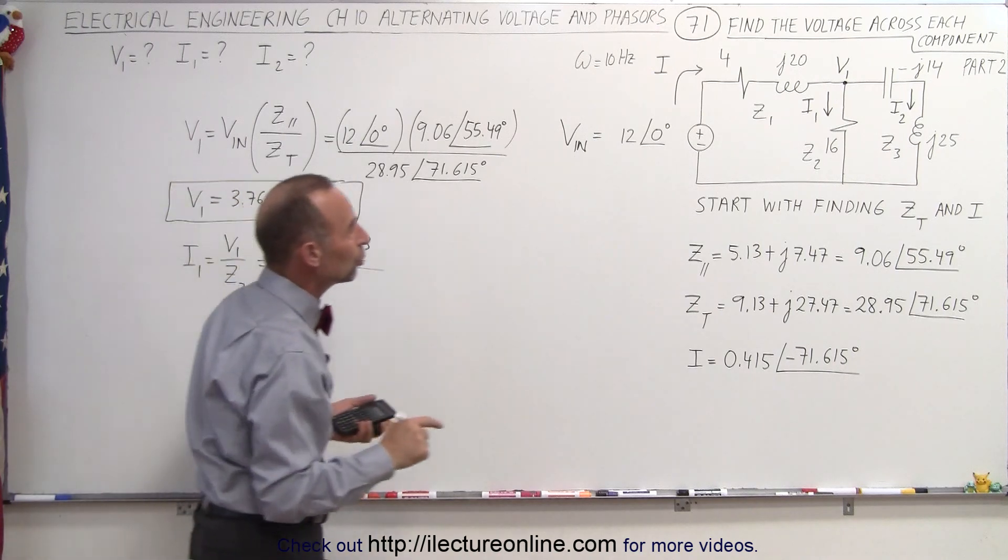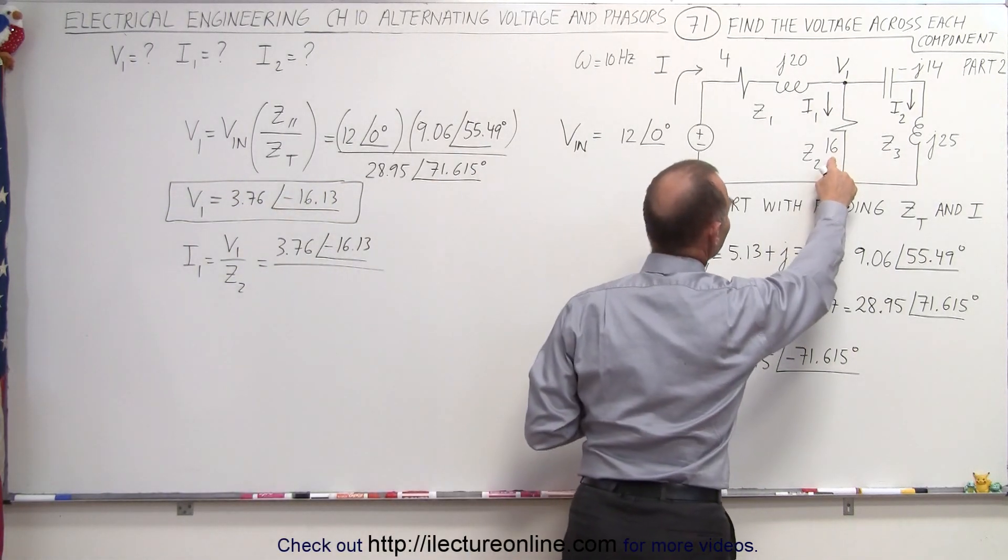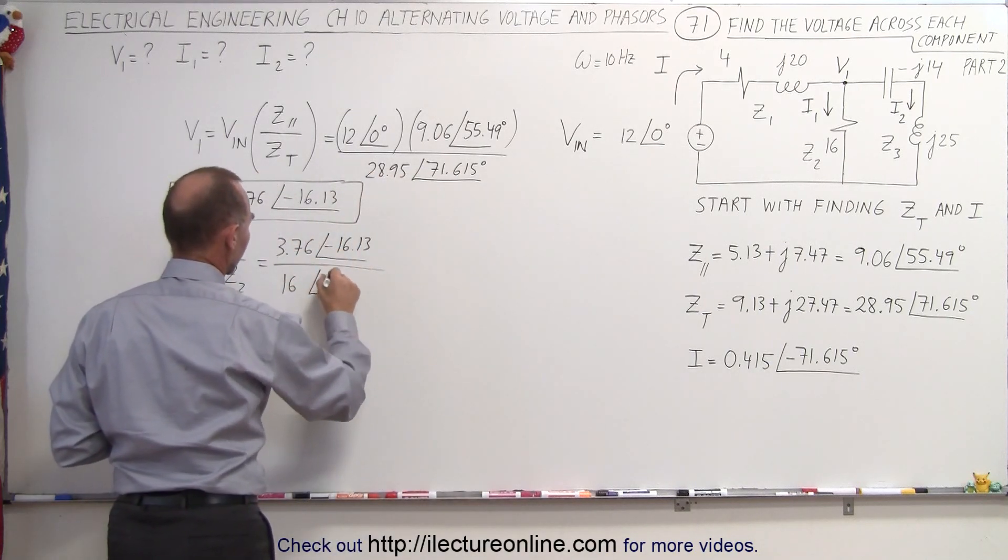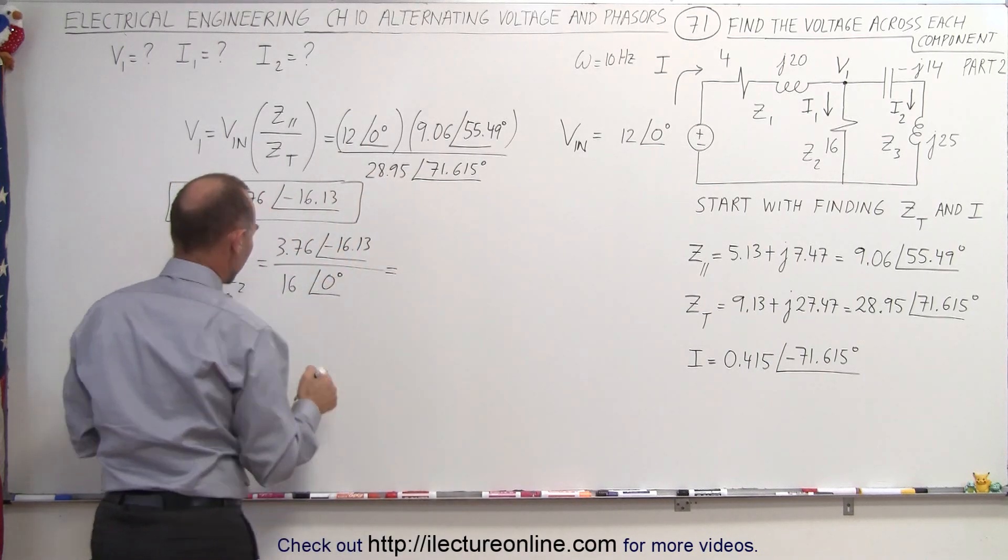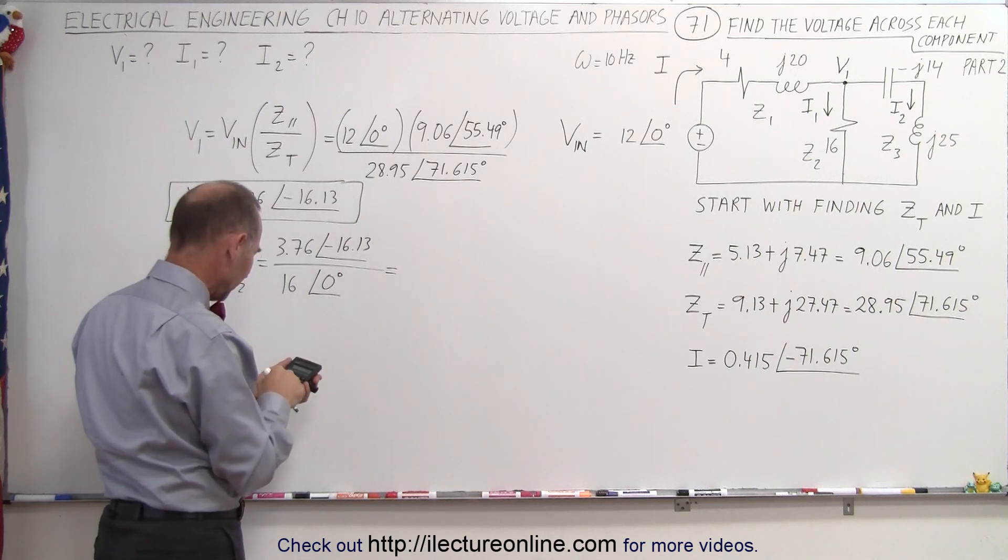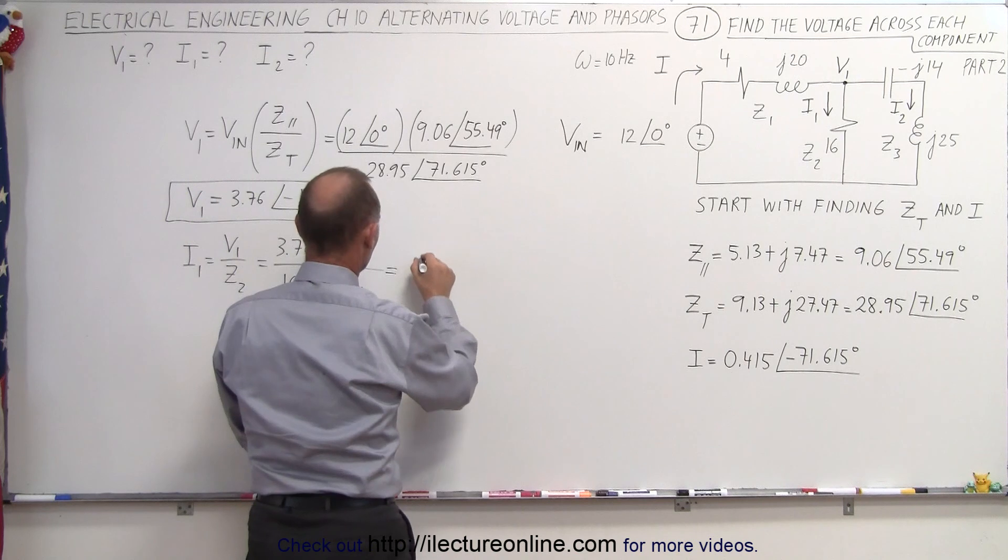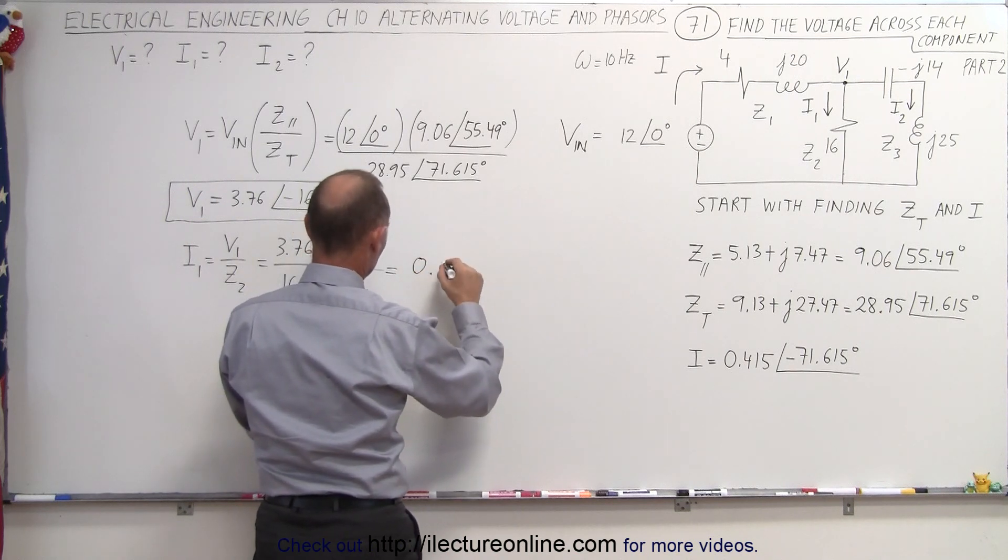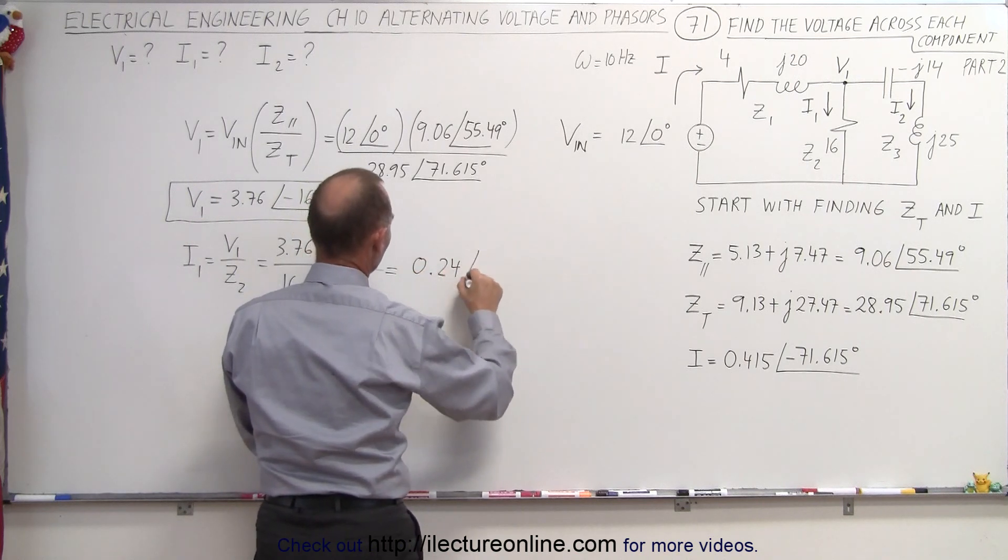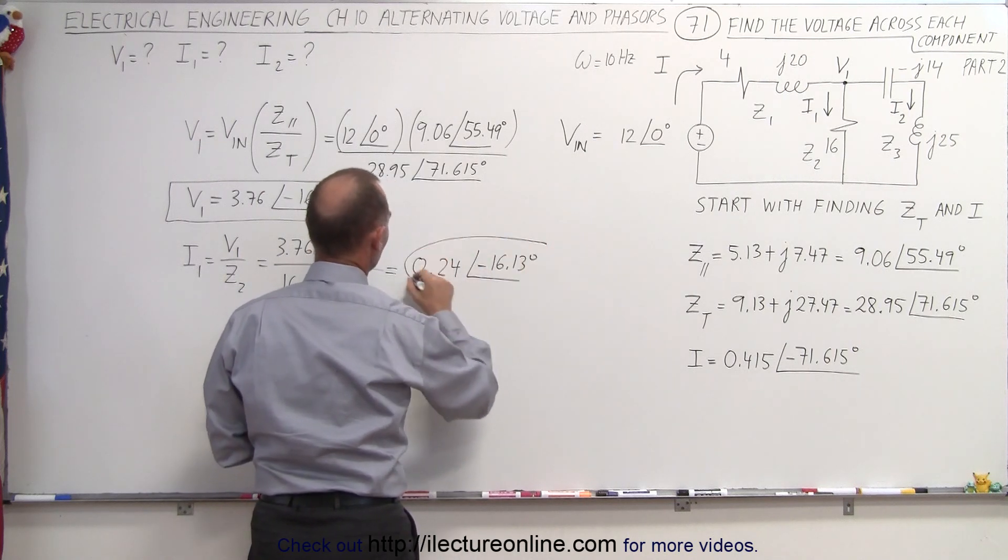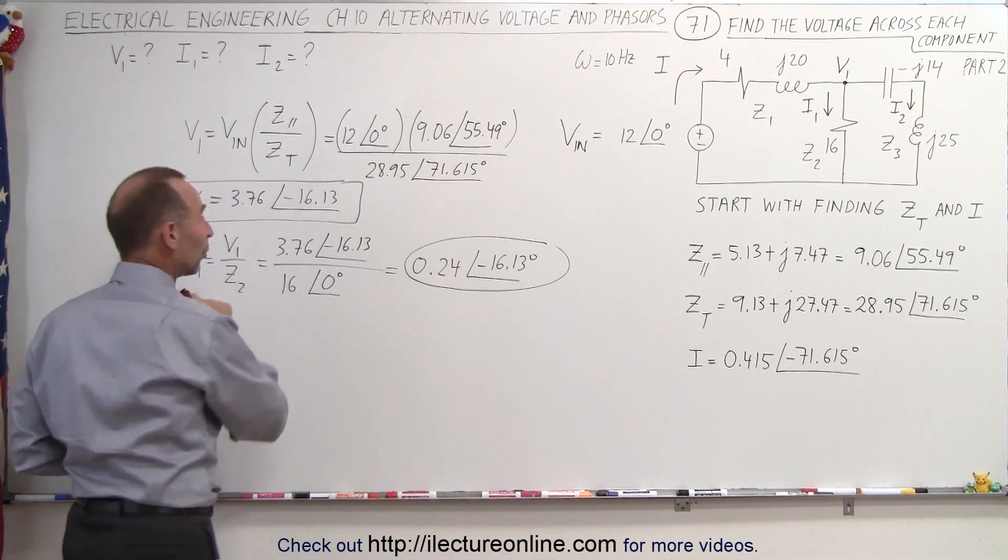divide by Z2, and so that would be 16, and a phase angle of 0. And so this becomes 3.76 divided by 16. That's a current of 0.24, with a phase angle of minus 16.13 degrees. So this here is our current in branch 1.